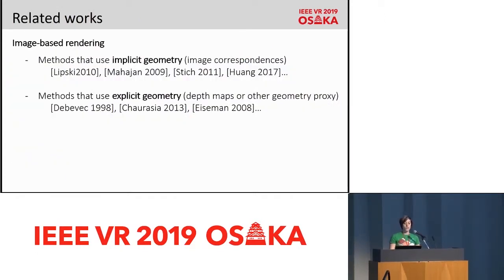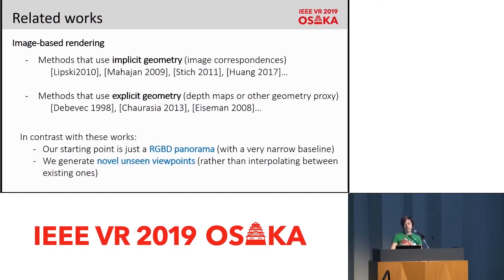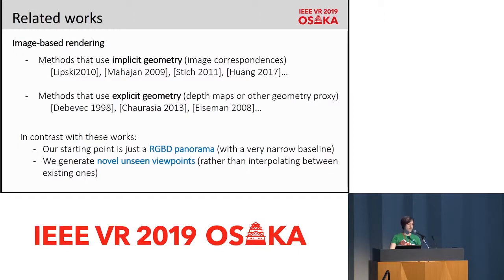There has been some previous work on image-based rendering dealing with similar problems. These works differ mainly in the characteristics of the input data or in the type of scene representation used. In general, they can be classified as methods using explicit geometry, such as depth maps or other geometry proxies. Our work is framed in the second category, but our input differs substantially from what these works typically use. Our system's starting point is just an RGB panorama and its depth, which has a very narrow baseline compared to previous works. We generate novel unseen viewpoints from each frame captured from a single fixed camera position, while existing works usually rely on interpolating between a set of already existing viewpoints.